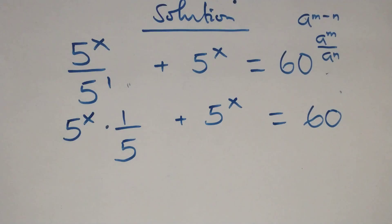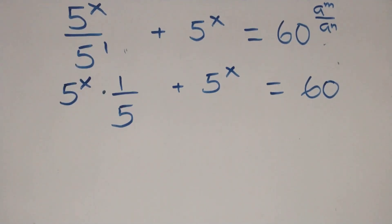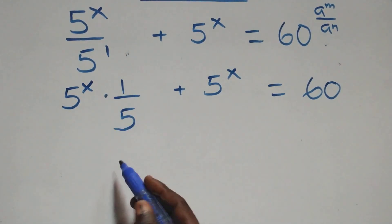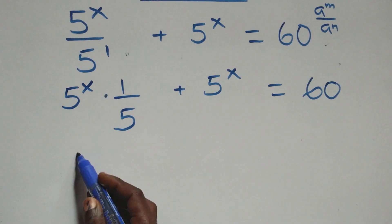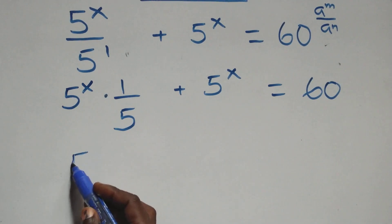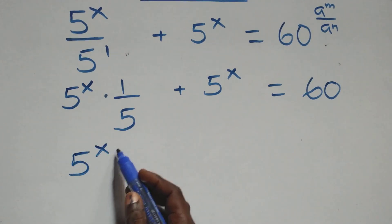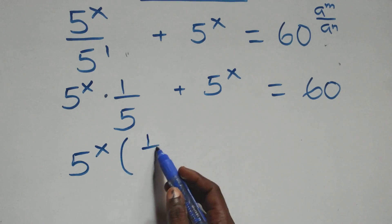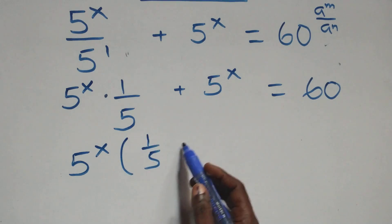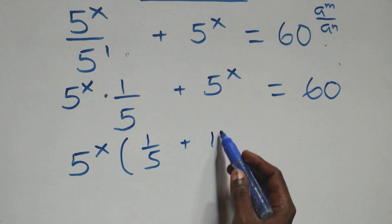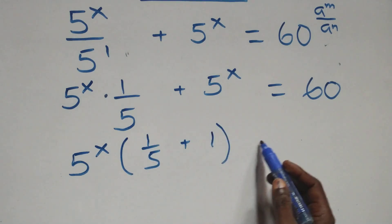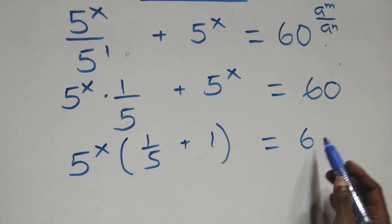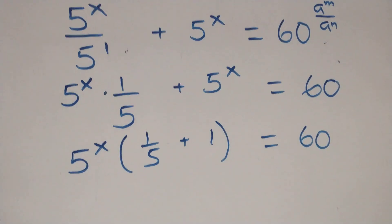Here we have 5 raised to power x — we factor it out, and this becomes 5 raised to power x into bracket (1 over 5 plus 1), then equals 60 on this side.